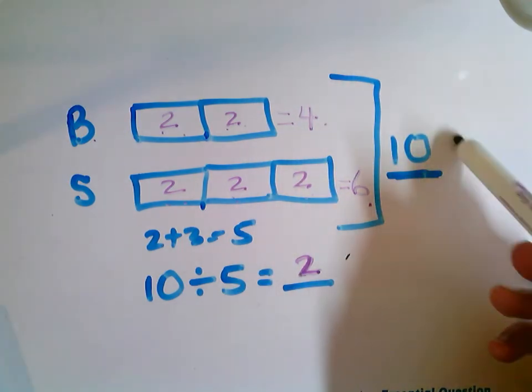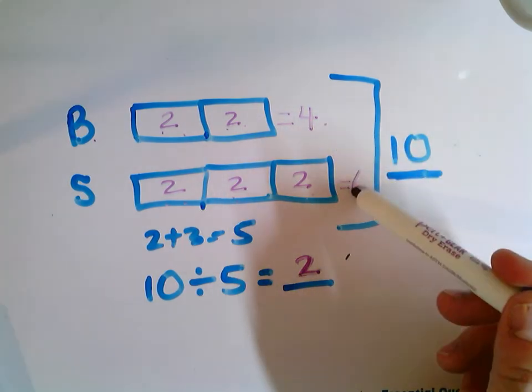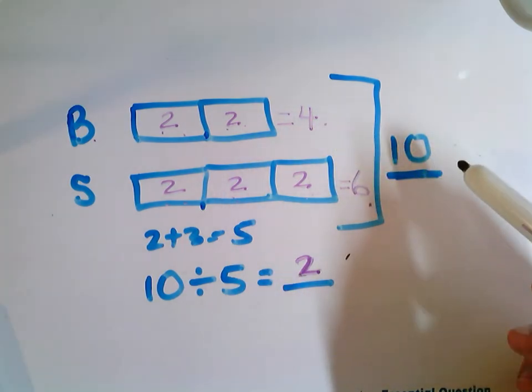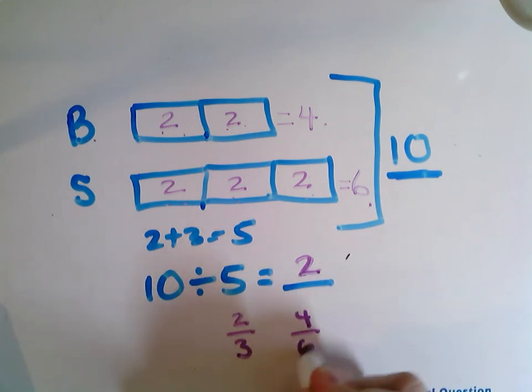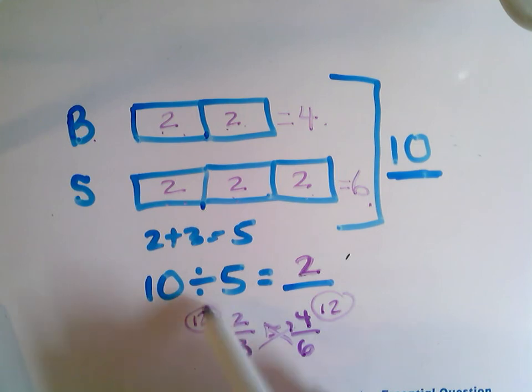And I can tell, wait, I have 10 altogether. Four plus six is 10. So that makes sense. And I can double check my ratios if I had a ratio of two to three and now I have four to six. I can multiply across this way, get 12. Multiply this way, get 12. They are equivalent.